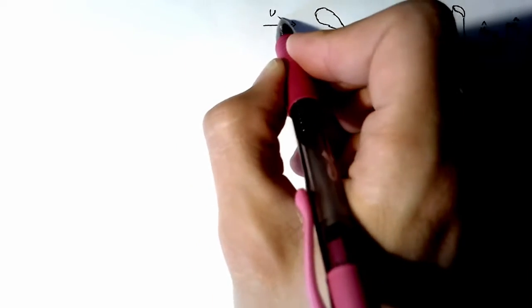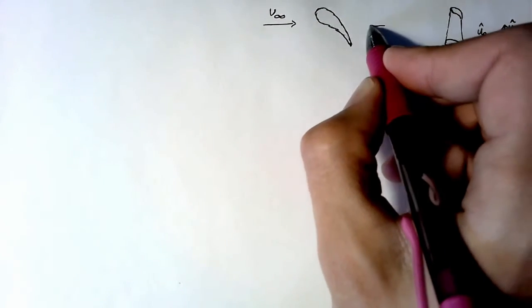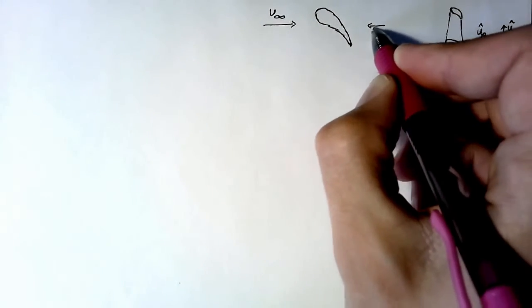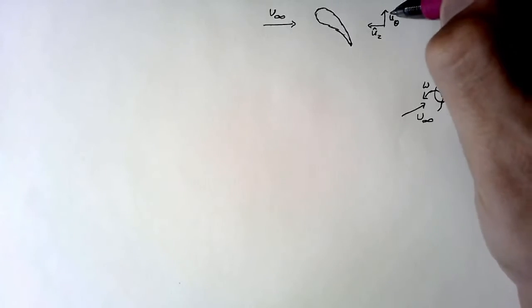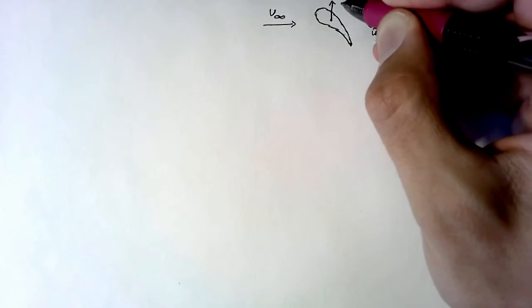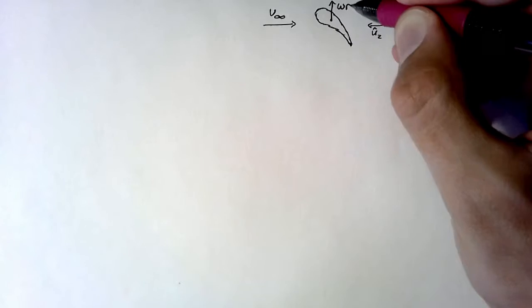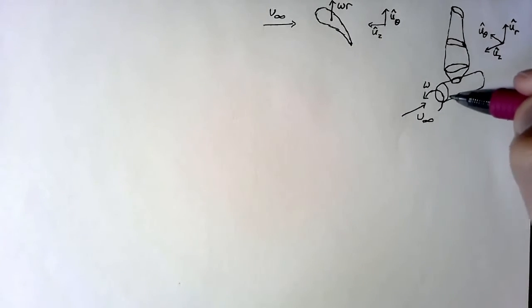So moving over to our sectional airfoil, we have some u-infinity coming in. This is in the negative u-z direction. Our airfoil is going to be moving in the u-theta direction, and its speed is going to be omega times r, where r is just the distance from the center of the hub.